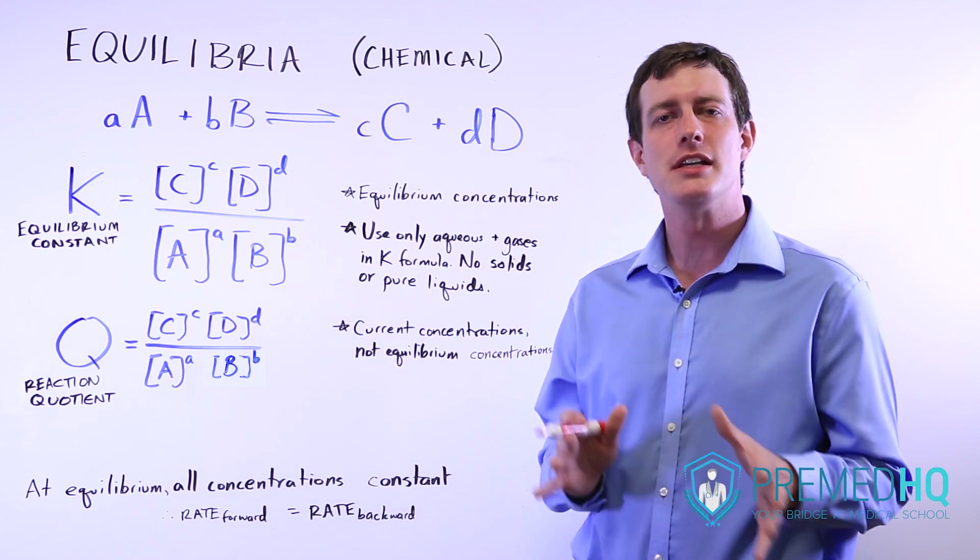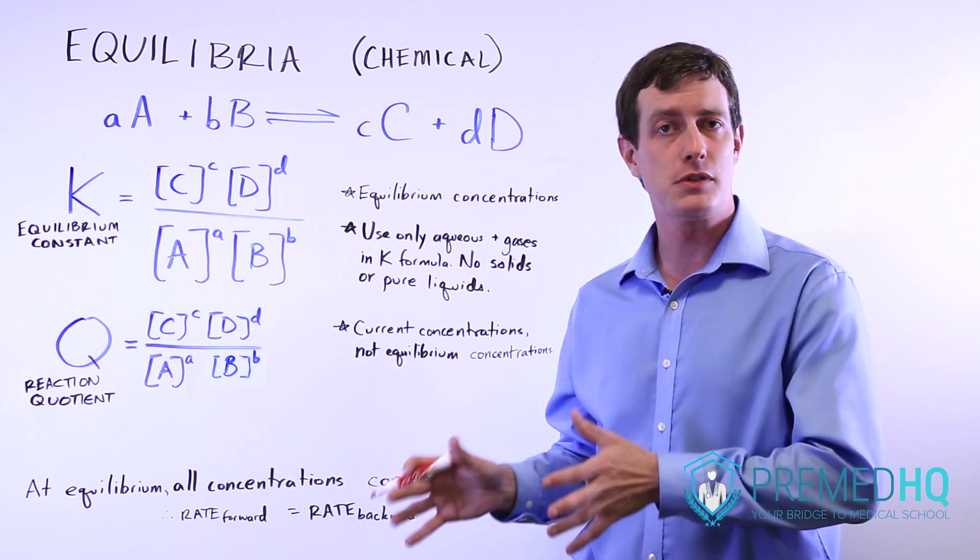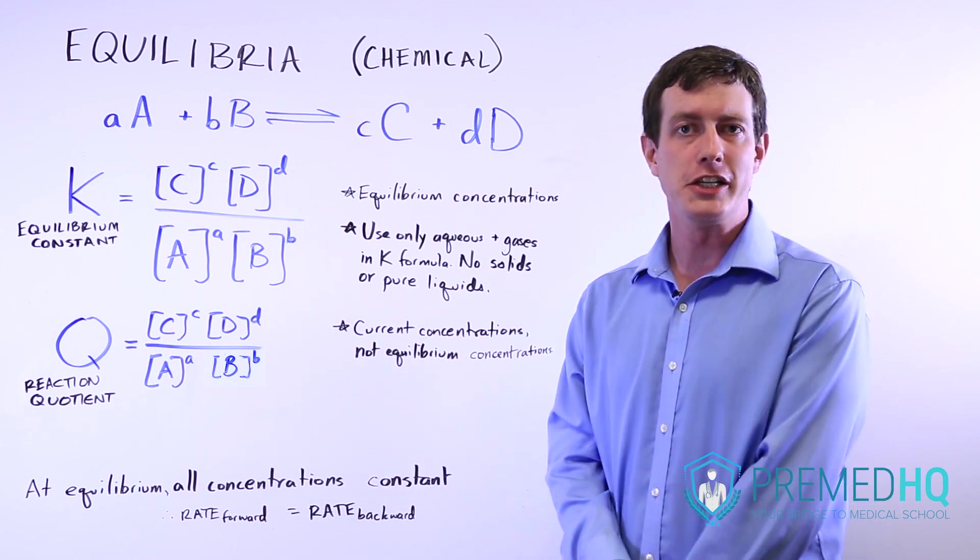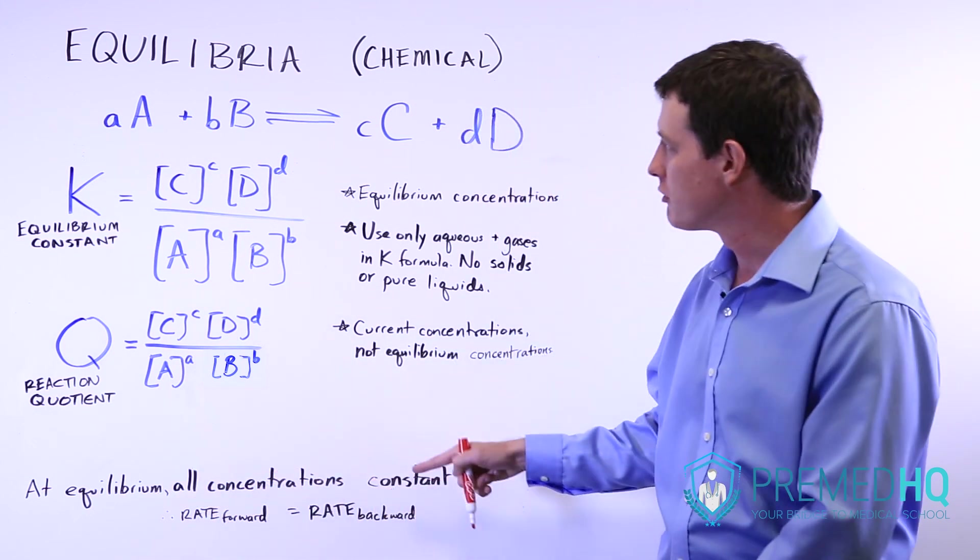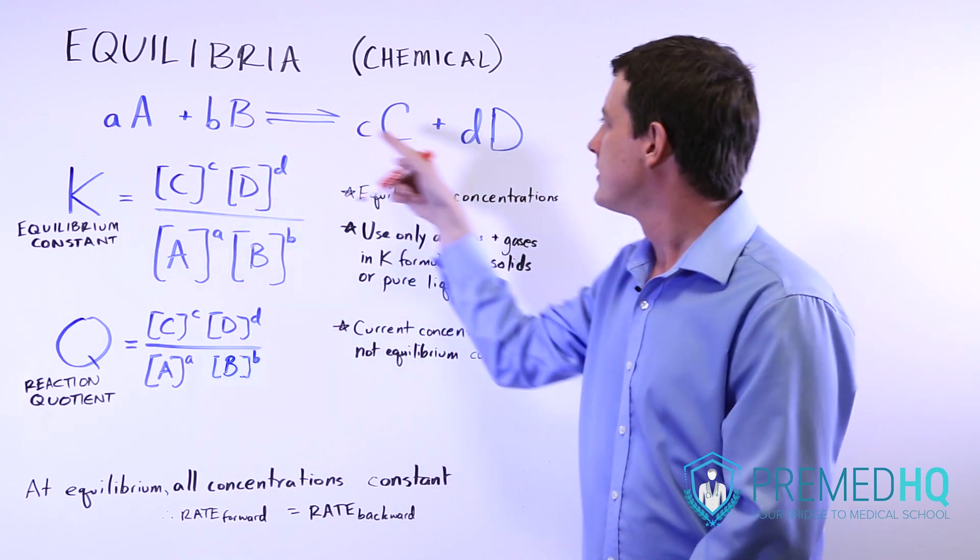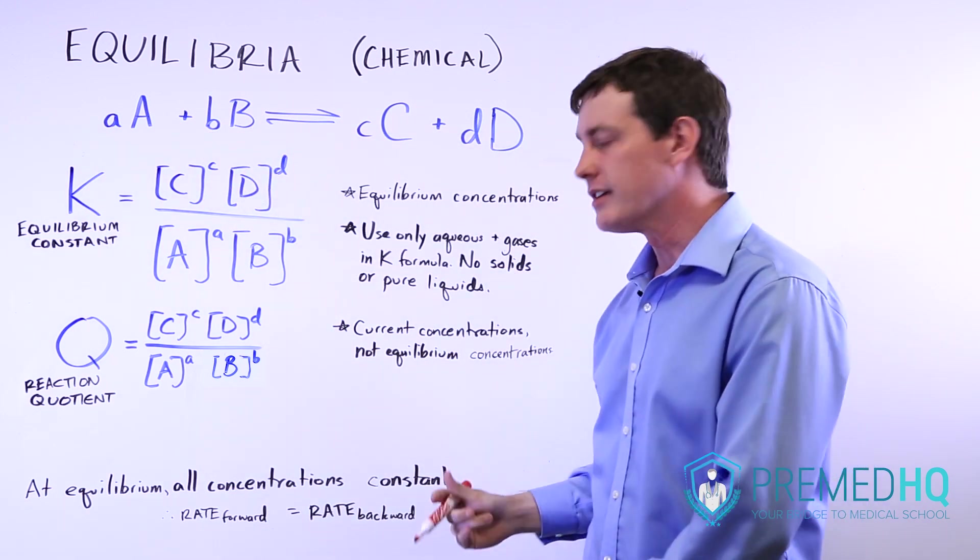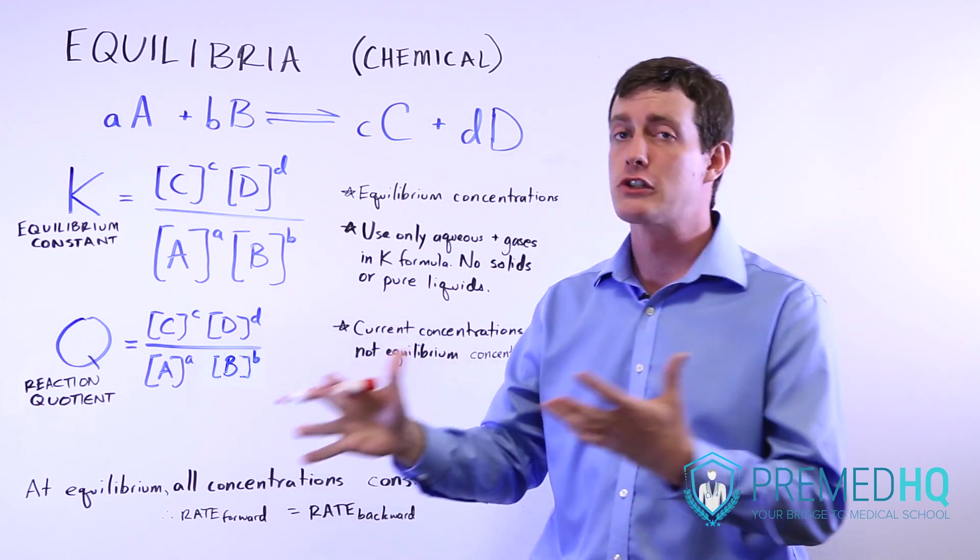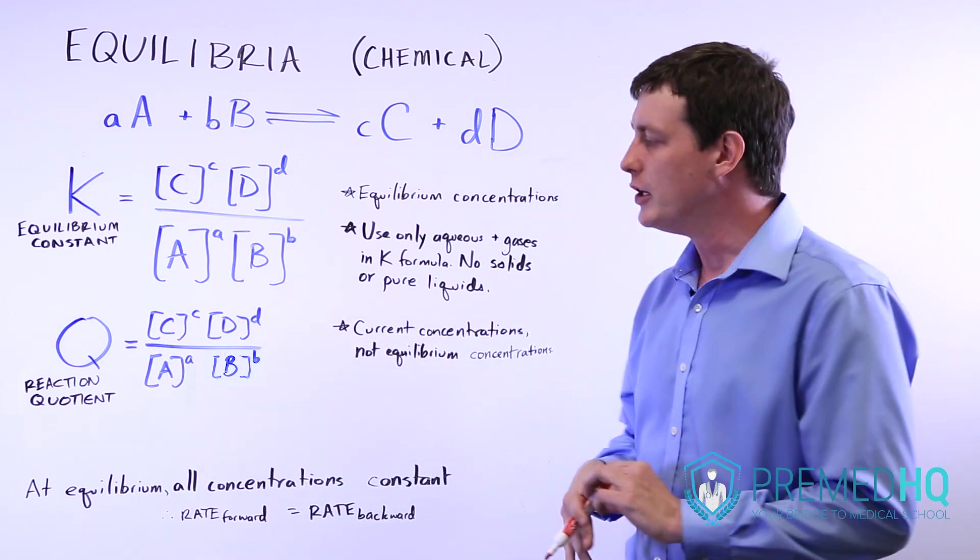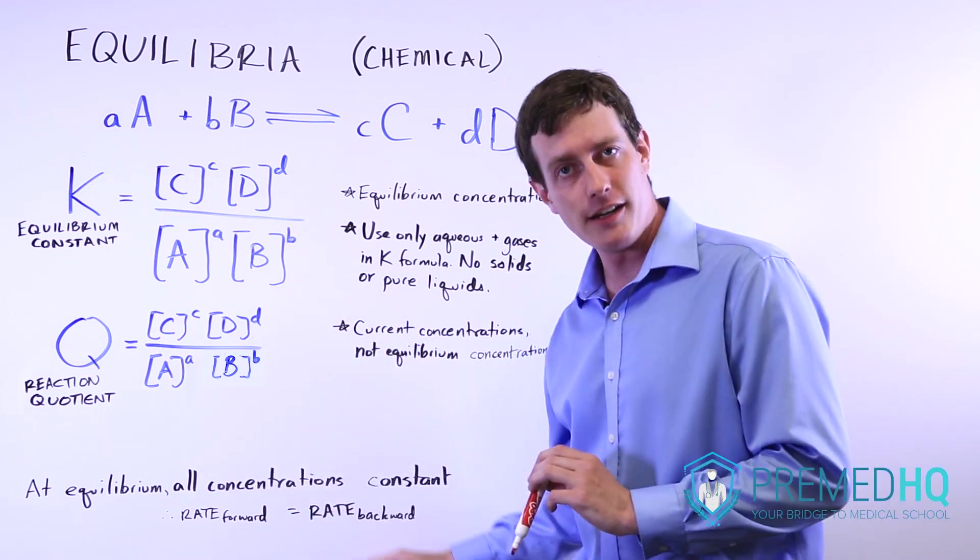In chemistry, equilibrium is a state that all reversible reactions eventually reach. It's defined as a state where all of the concentrations of reactants and products remain constant, and the rate of the forward reaction equals the rate of the reverse reaction. Notice that equilibrium is not rate.